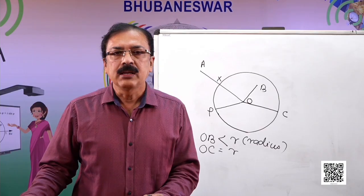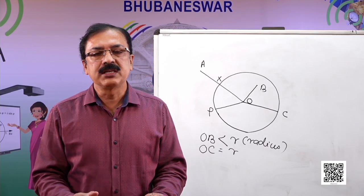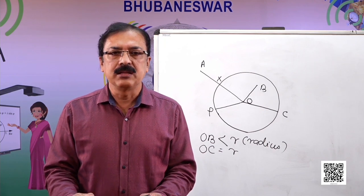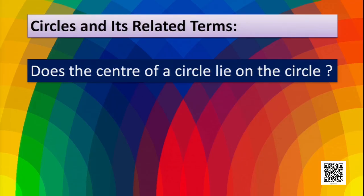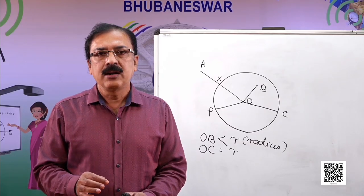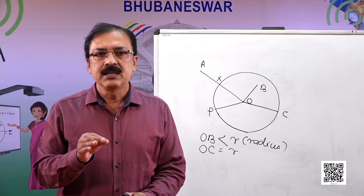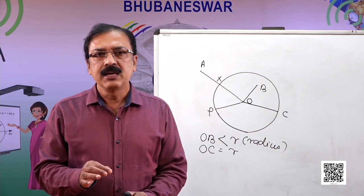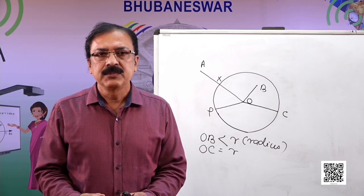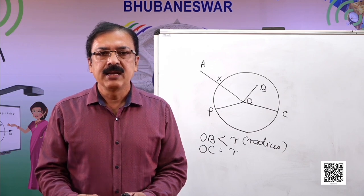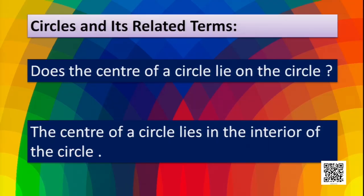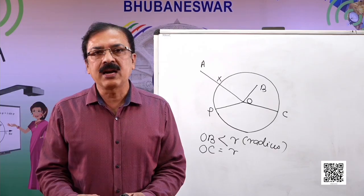Does the center of a circle lie on the circle? When we draw a circle, we fix a point and move the pencil around it, which means the fixed point is inside the circle. So the center of a circle lies in the interior of the circle — it is not part of the circle itself.